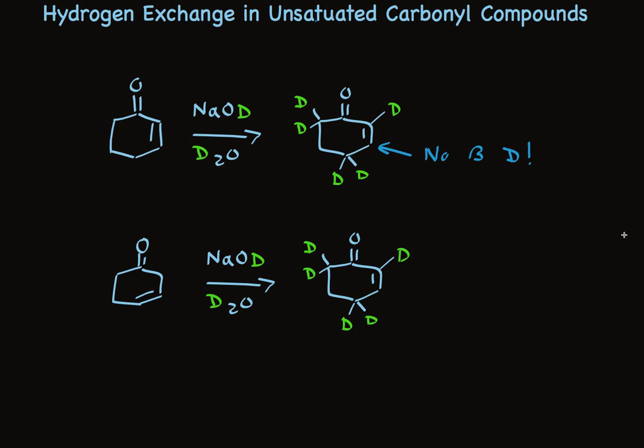So hydrogen exchange in unsaturated carbonyl compounds occurs at the alpha position and the gamma position, but never the beta position. And ultimately the products are alpha-beta unsaturated whether you start with the alpha-beta unsaturated ketone or the beta-gamma unsaturated ketone.